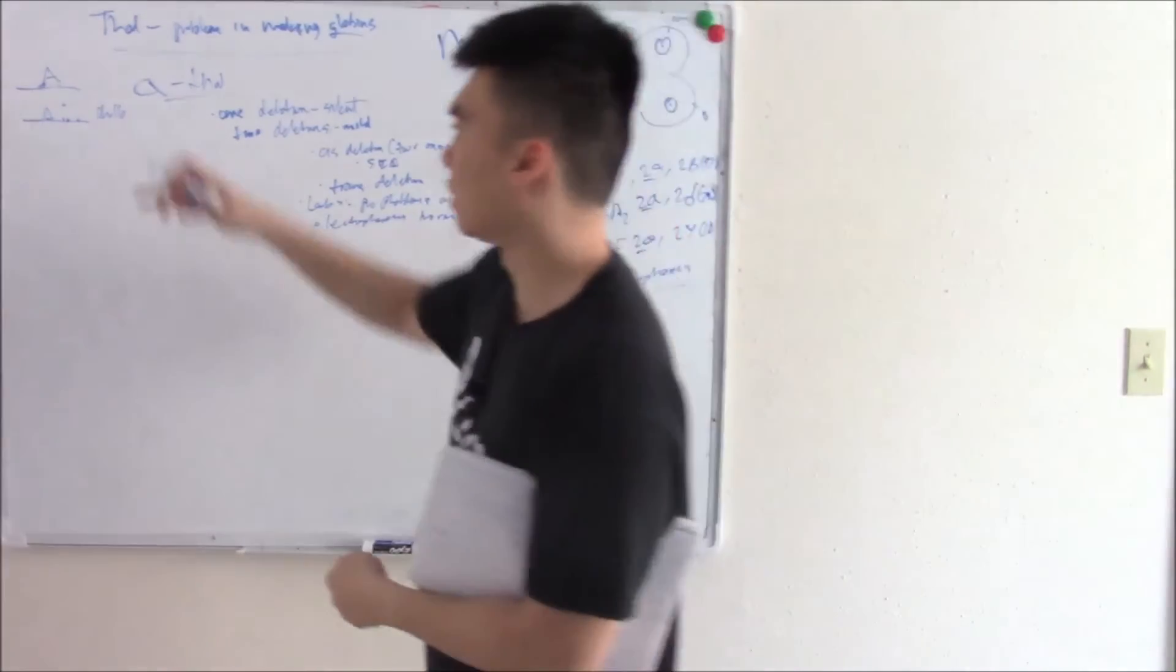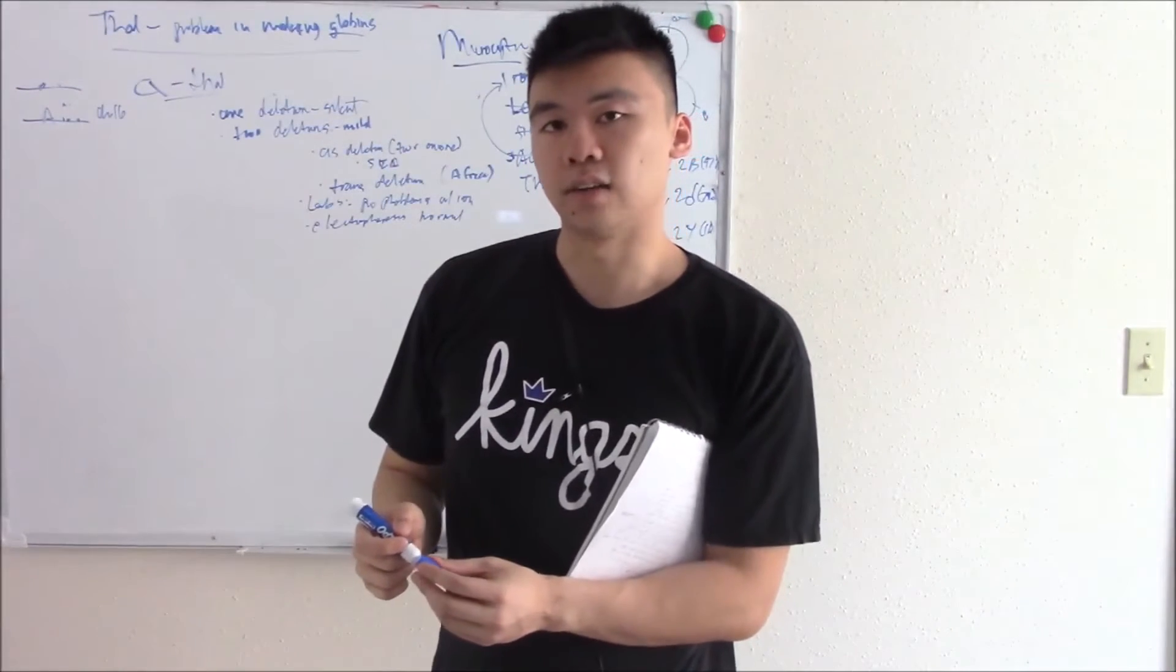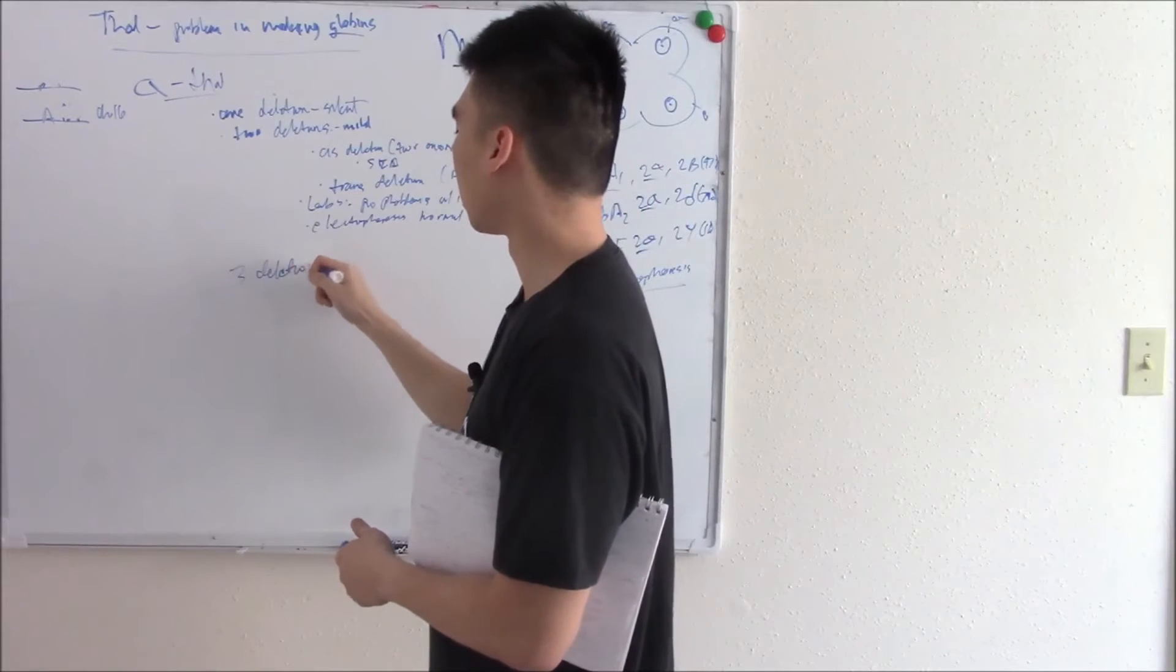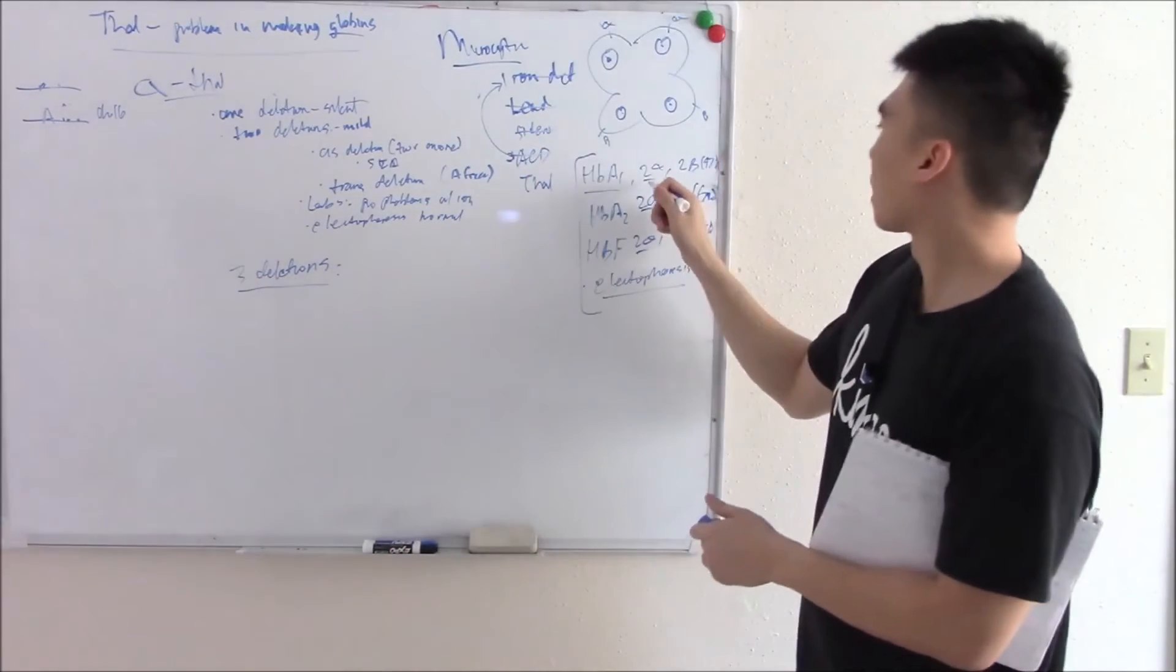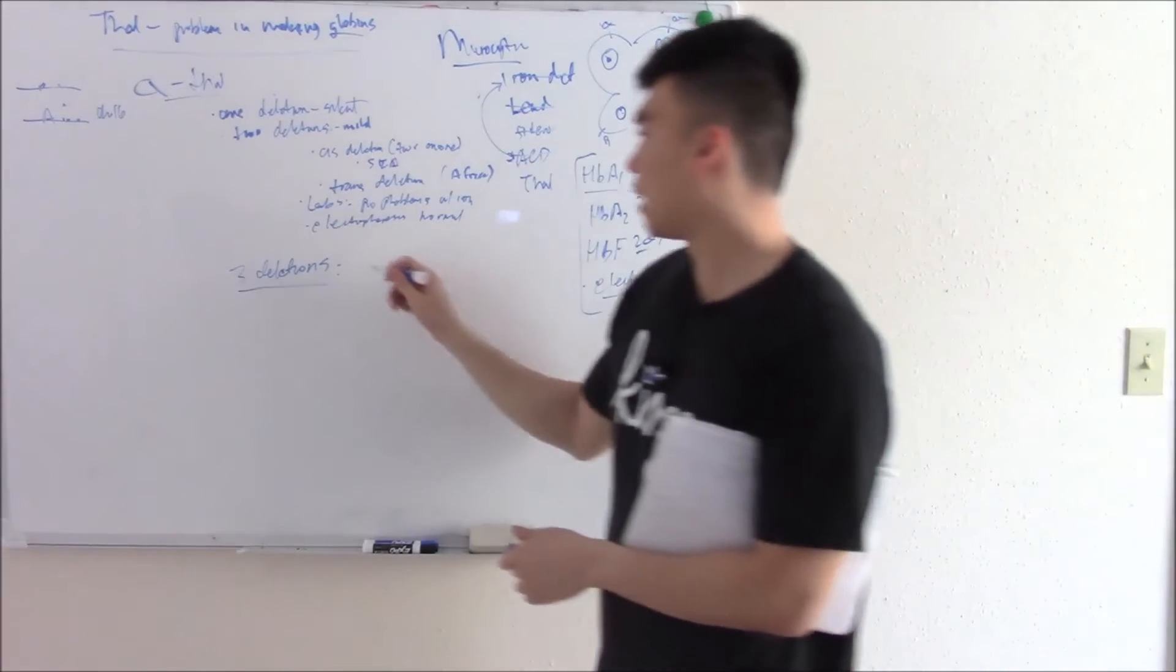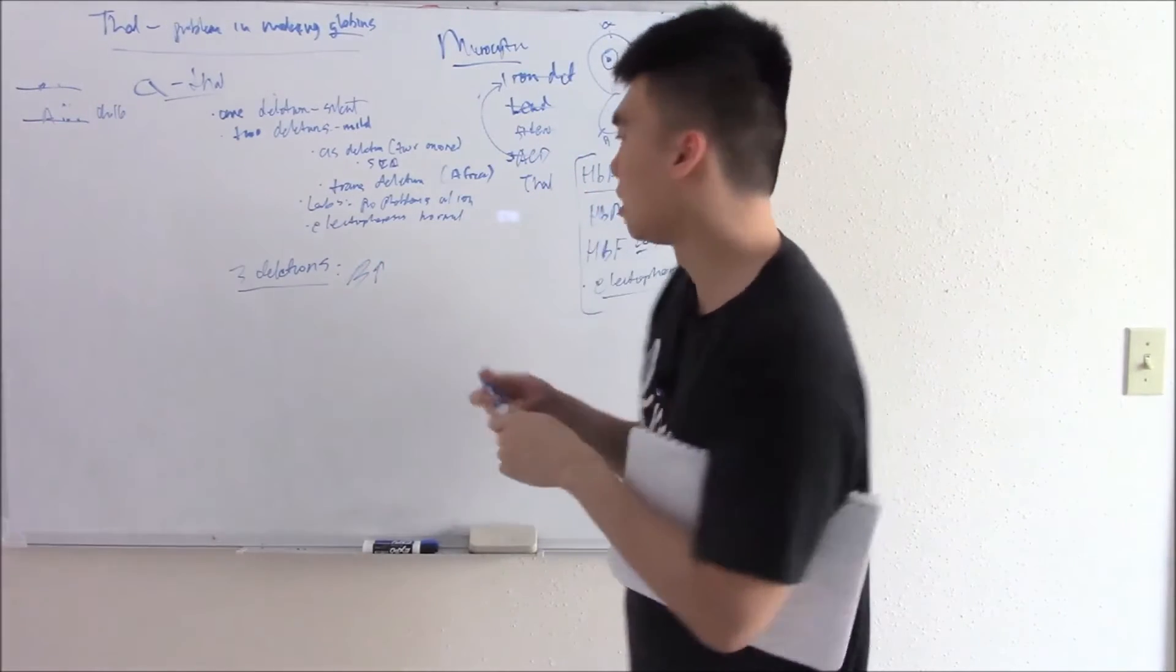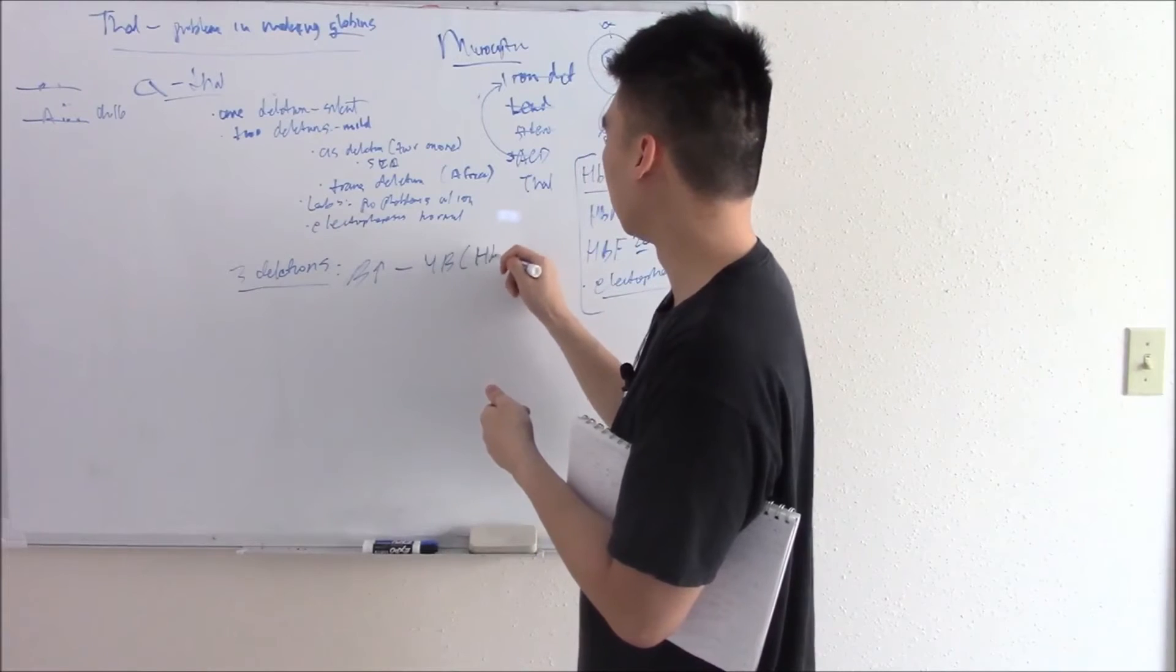What happens if you delete three? That is a severe decrease in alpha production. And when you have a severe decrease in alpha production, then all the other chains will start to increase. So three deletions, things will start to decrease. And in adults, the main alternative chain is going to be beta. And beta chains are going to skyrocket. So much so that they start to combine together and tetramerize, become four betas or hemoglobin H.